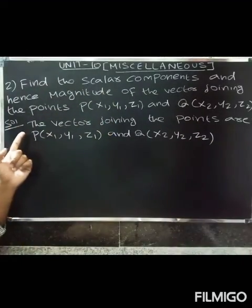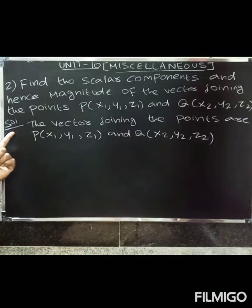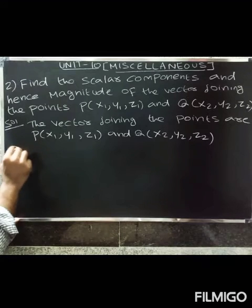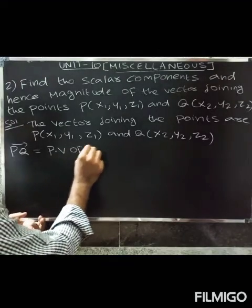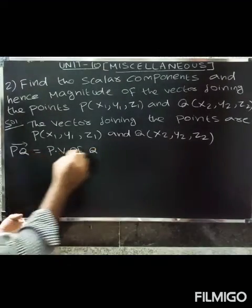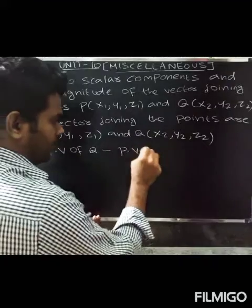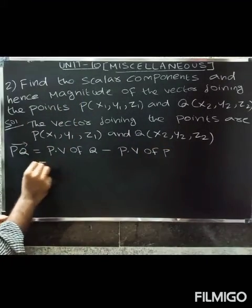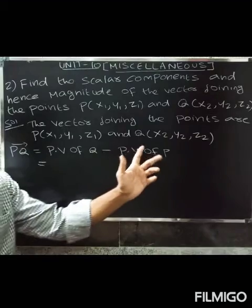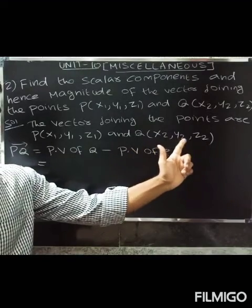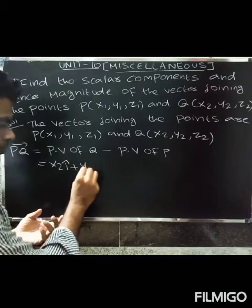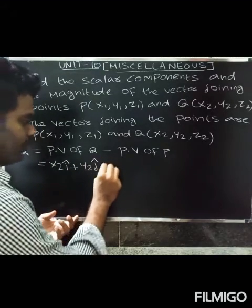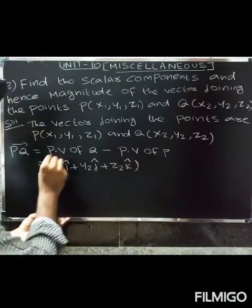The vector joining points P(x1, y1, z1) and Q(x2, y2, z2) is PQ vector. PQ vector equals the position vector of Q minus the position vector of P. Position vector of Q is x2 î + y2 ĵ + z2 k̂.